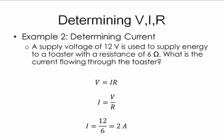Second example, supply voltage of 12 volts is used to supply energy to a toaster with resistance 6 ohms. What's the current? Current is given by voltage divided by resistance, 12 divided by 6 which is 2 amps. Again, very simple, very basic calculations.